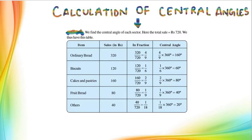In the same way, biscuits give an angle of 60 degrees, cakes and pastries give 80 degrees, fruit bread gives 40 degrees, and others generate 20 degrees. Now, what is a pie diagram? It is a circle graph.